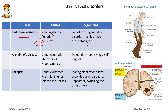Alzheimer's disease is caused by genetic mutation and also by the shrinking of the hippocampus — the part of the brain where new memories are stored. If the hippocampus shrinks, you will suffer from dementia or memory loss, mood swings where your brain oscillates between moods, and self-neglect.